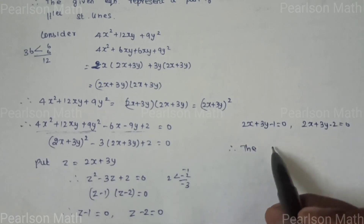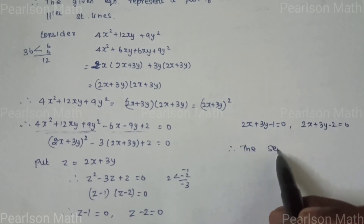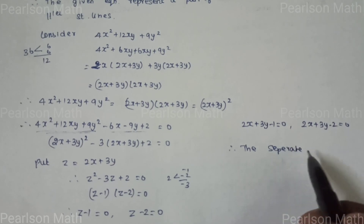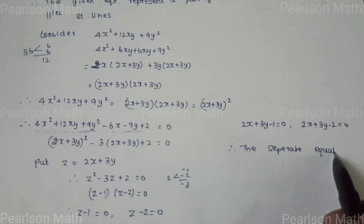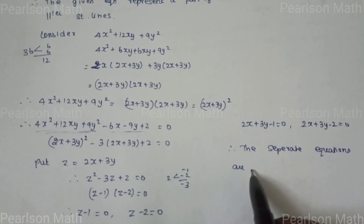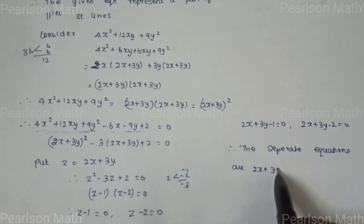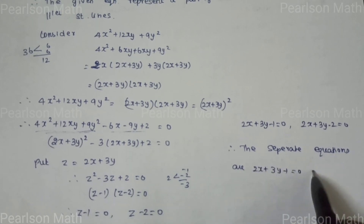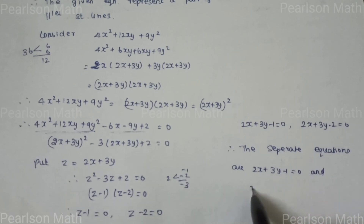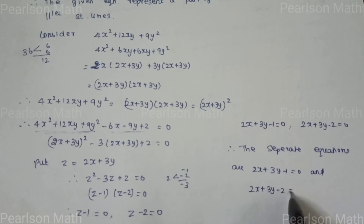Therefore the separate equations are 2x + 3y - 1 = 0 and 2x + 3y - 2 = 0.